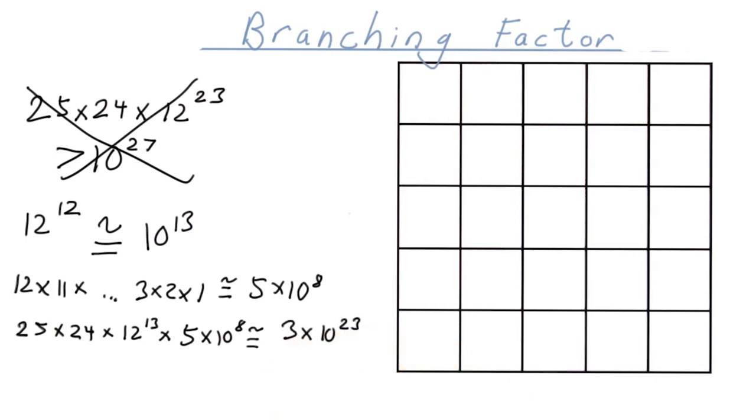That is better than 10 to the 25th, or the 10 to the 27th, but still seems like a gross overestimate, as most branches will have much less than the maximum branching factor. Let's see if the students have a better answer than we do.